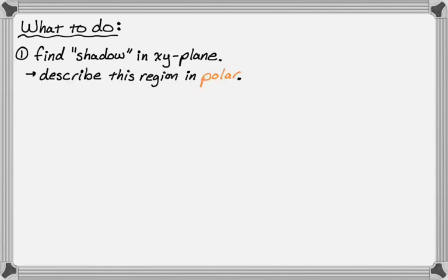So the first thing that we're going to do is we're going to have a volume that's described and what I like to do is think of it as finding the shadow in the x-y plane. So think about the volume that you're given, maybe sketch some figures, work your way down to the shadow in the x-y plane, and then once you have that, we're going to try to describe that region using polar coordinates.